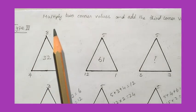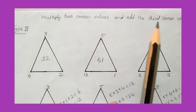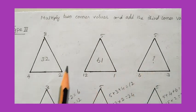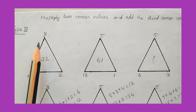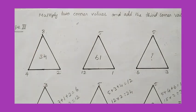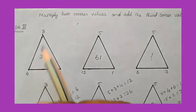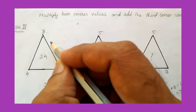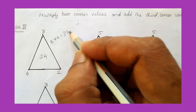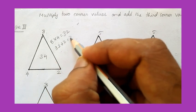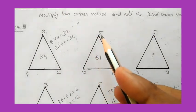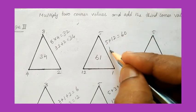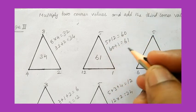Next is Type 3. Here the logic is: multiply two corner values, then add the third corner value. Comparing the first triangle: 8 multiplied by 4 equals 32, then 32 plus 2 equals 34. For the second triangle: 12 multiplied by 5 equals 60, then 60 plus 1 equals 61. This logic works for both triangles.